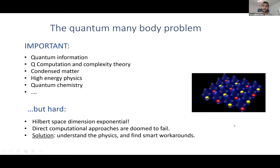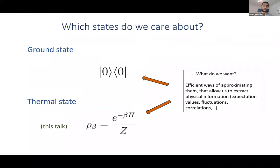Once you understand the physics, hopefully you can find smart workarounds around the problem of doing very expensive computations. We don't care about all states in Hilbert space, but especially about particular ones. I'd say the two most important ones are the ground state of the Hamiltonian and the thermal state. I'm going to talk about thermal states. What we want is efficient ways of approximating thermal states and ground states that allow us to extract physical information — expectation values, fluctuations, correlations, or any physically relevant data.